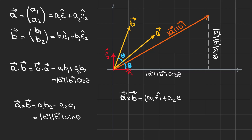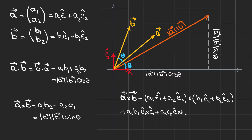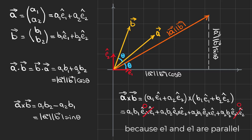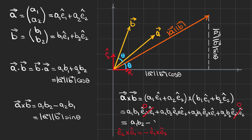If you wonder how we calculate the cross product of a and b, we write them in component form and then compute the cross product. These two terms e1 cross e1 and e2 cross e2 are zero because the sine of the angle between them is zero, and we can write e2 cross e1 as minus e1 cross e2, yielding a1·b2 minus a2·b1 times the perpendicular component e1 cross e2 — but in this video we ignore that component because we stick to the 2D plane. So to sum up: this is a dot b and this is a cross b.